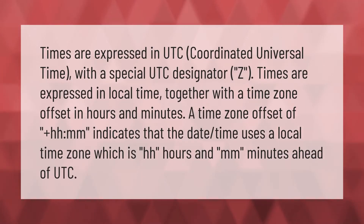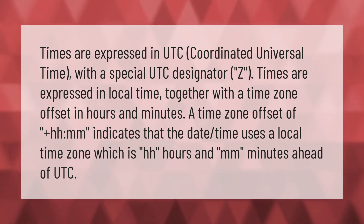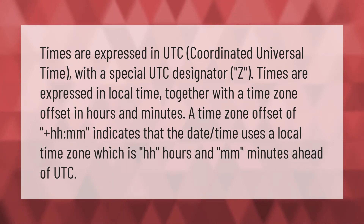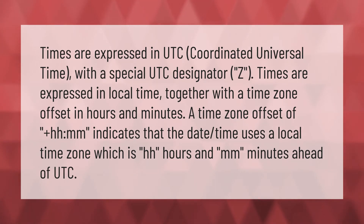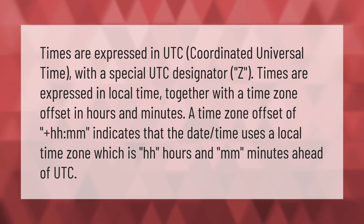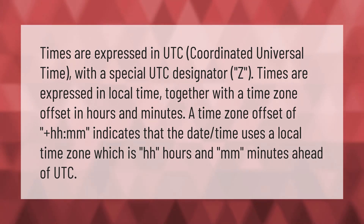Times are expressed in UTC — Coordinated Universal Time — with a special UTC designator Z. Times are also expressed in local time together with a time zone offset in hours and minutes. A time zone offset of plus HH:MM indicates that the datetime uses a local time zone which is HH hours and MM minutes ahead of UTC.